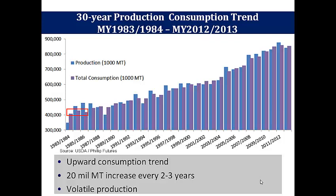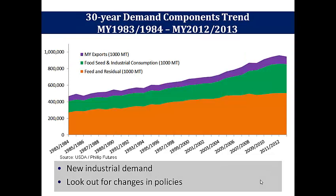Putting production and consumption together, consumption approximately increases by 20 million metric ton notches every 2 to 3 years. In the meanwhile, production is rather volatile and much unpredictable, trending below consumption 50% of the time. Zooming into the components of corn consumption, feed use and export use increased steadily over the years, but there seemed to be a sudden spike in industrial use. This is explained by corn ethanol and the Energy Independence and Security Act of 2007, the EISA. The EISA mandates that 9 billion gallons of renewable fuel be blended into transportation fuel in 2008, and 36 billion gallons by 2022, effectively creating new demand for ethanol.